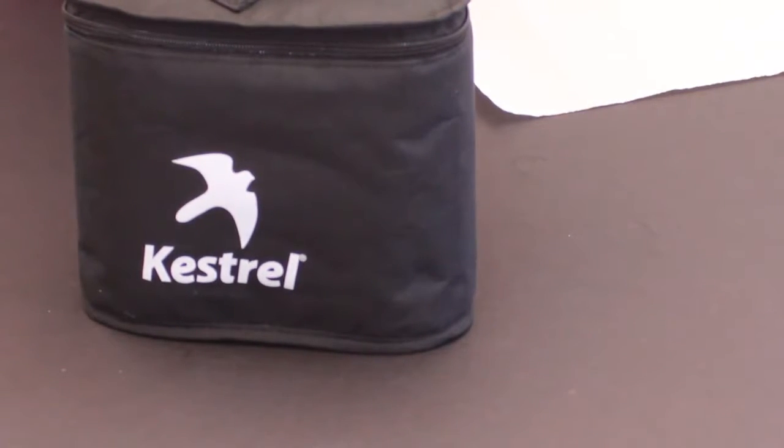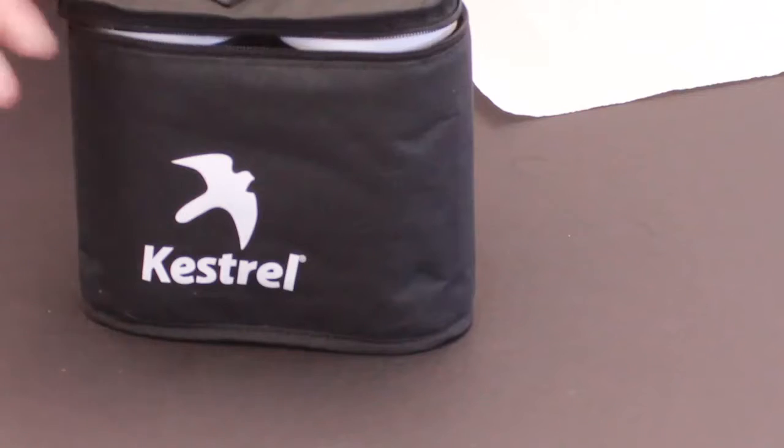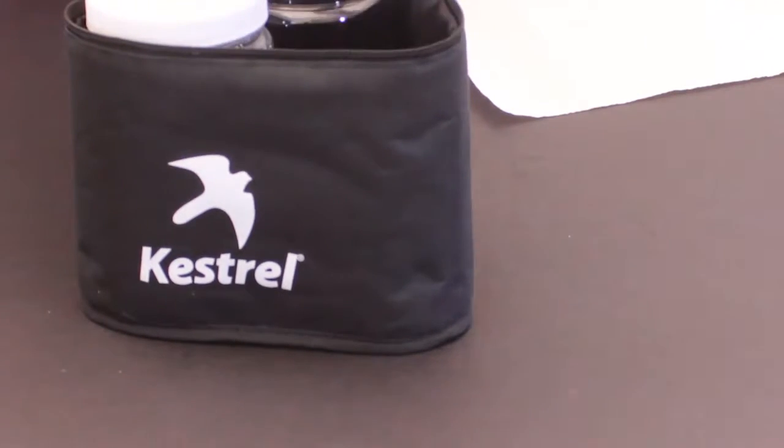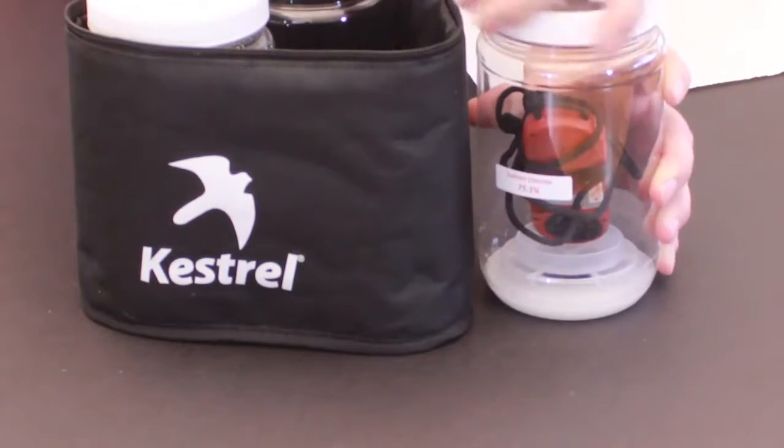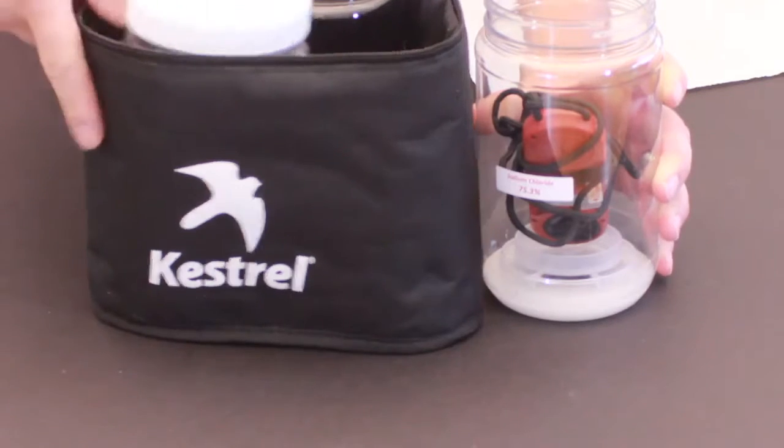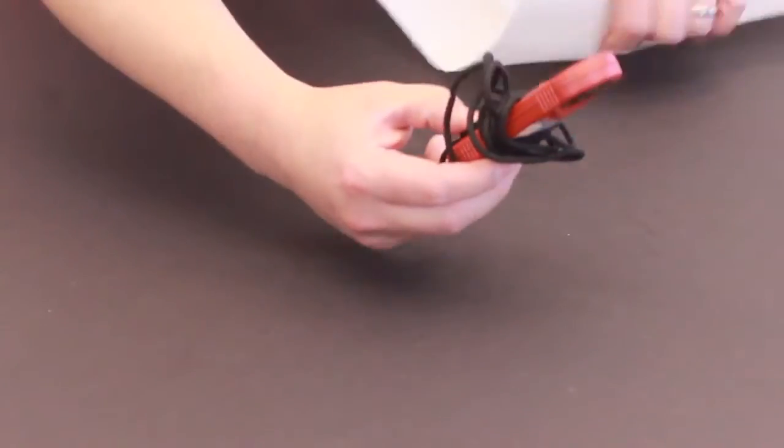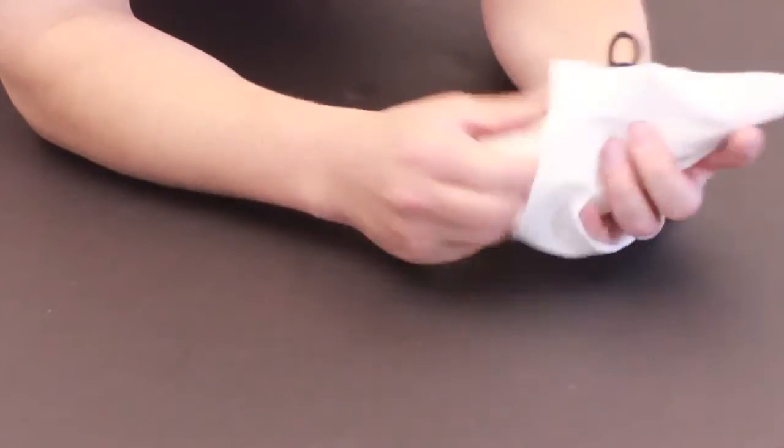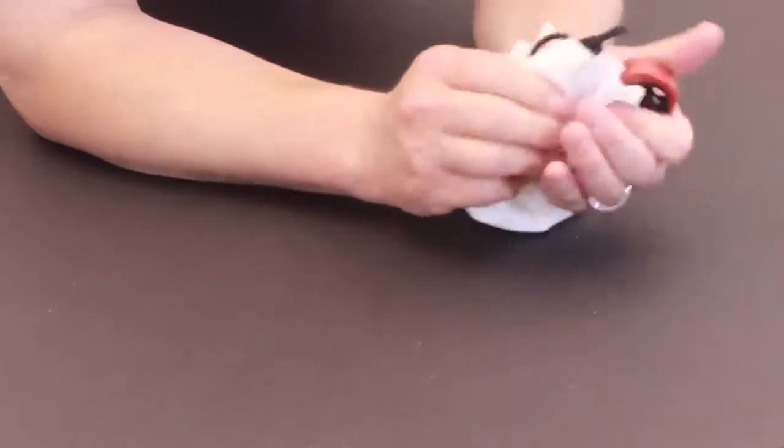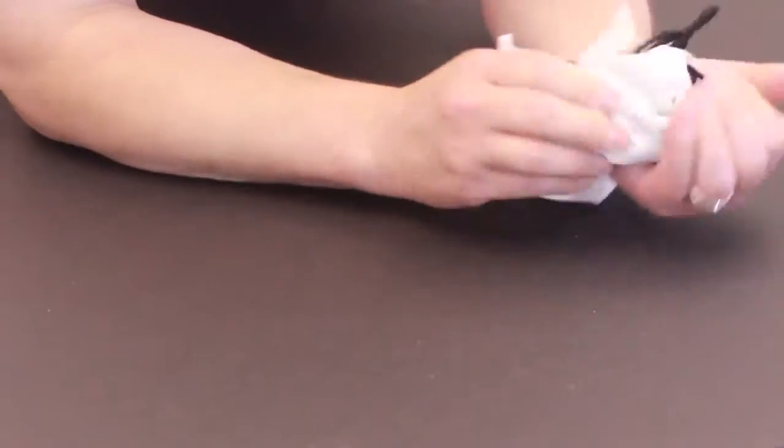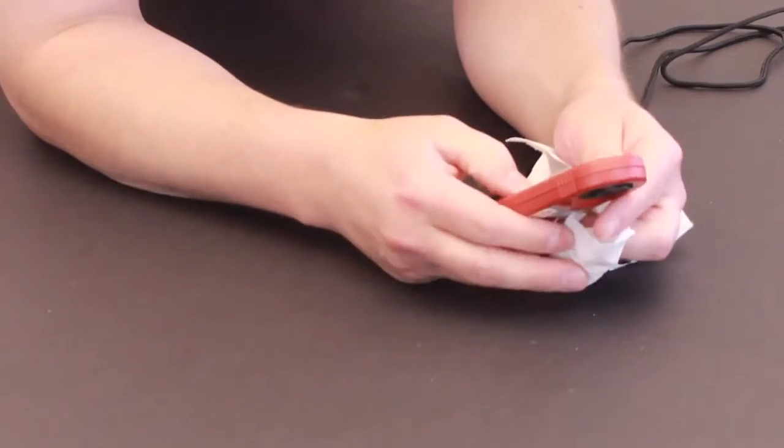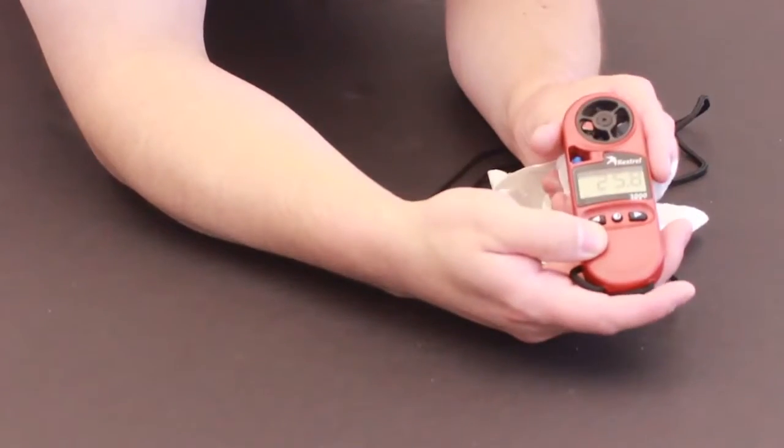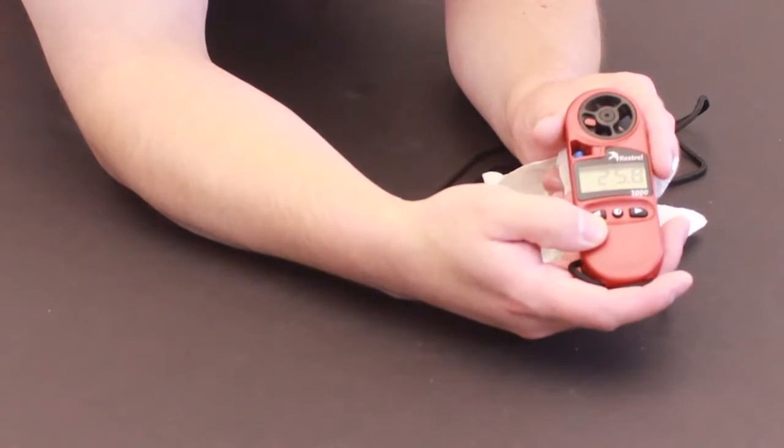Another hour has passed, so let's open up the calibration kit. We're going to open up the sodium chloride chamber. The unit will say end on it, signifying that as complete, but we also want to wipe it off. Make sure any excess salts are not on the lanyard or anything like that. Once we hit the center button, we're back into the regular mode of operation with a calibrated Kestrel.